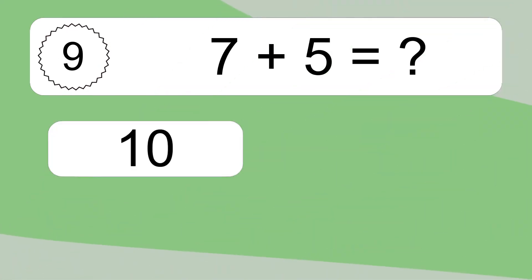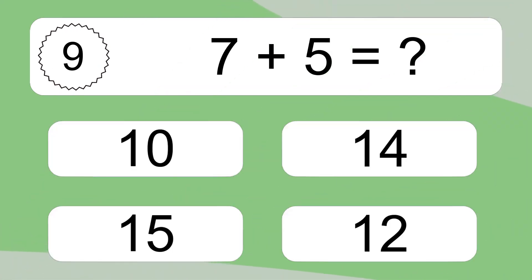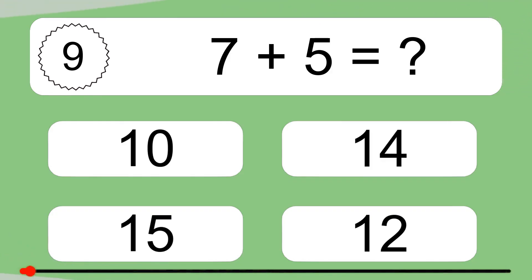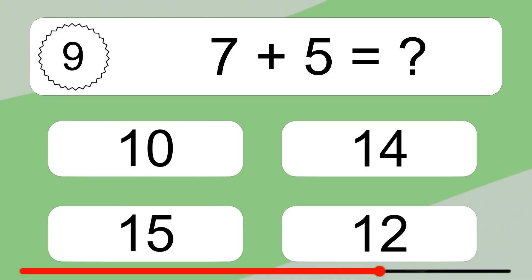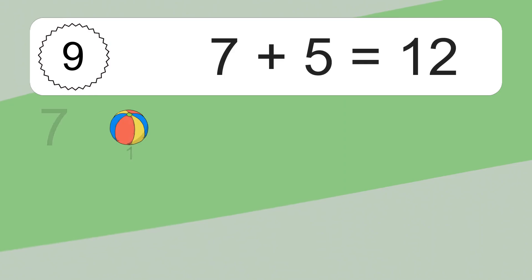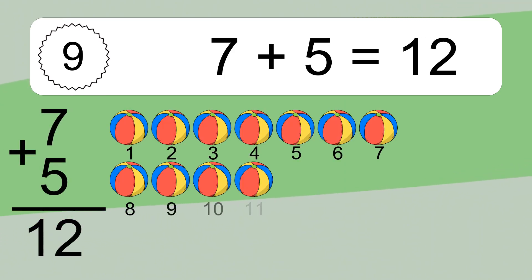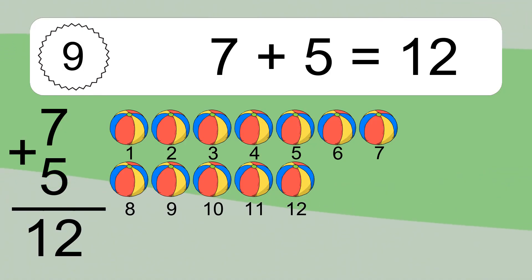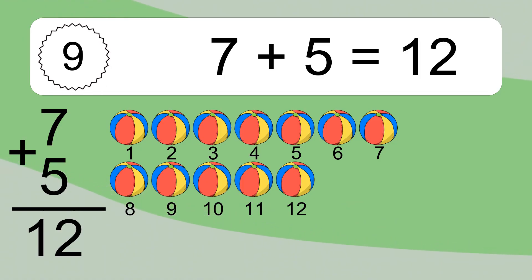Seven plus five equals what? Seven plus five equals twelve. Let's count it: one, two, three, four, five, six, seven, eight, nine, ten, eleven, twelve.